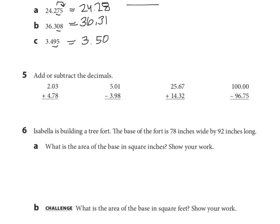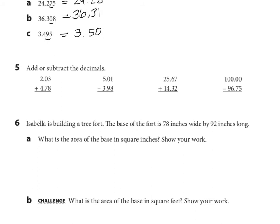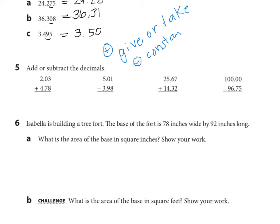Looking at number five: add or subtract the decimals. In addition, we're going to use the give or take strategy. In subtraction, we're going to use the constant difference. Those two strategies we talked about in class were give and take — for addition — and constant difference — for subtraction. We hear the word difference, and we know difference is in subtraction.